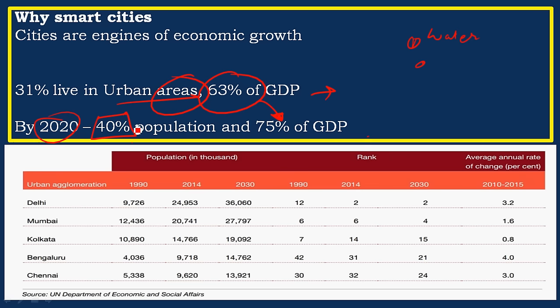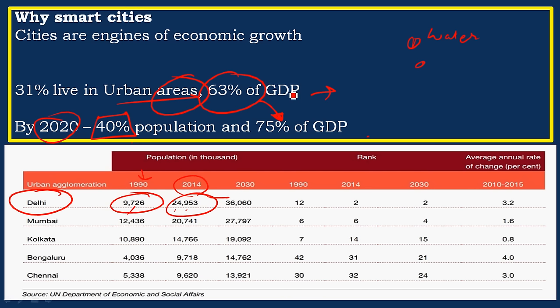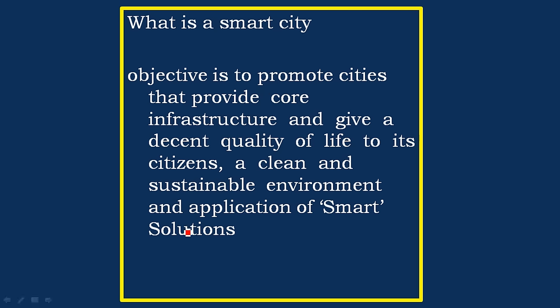Let's look at how Indian cities have grown over the past two decades. Delhi had only 97 lakh population in 1990; it increased to 2 crore 49 lakh by 2014 — a huge increase placing enormous burden on natural resources. Similarly, Bangalore had only 40 lakh population in 1990; by 2014 it increased to 97 lakh, close to one crore. We need smarter solutions to make these cities sustainable.